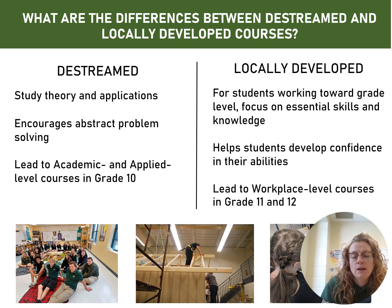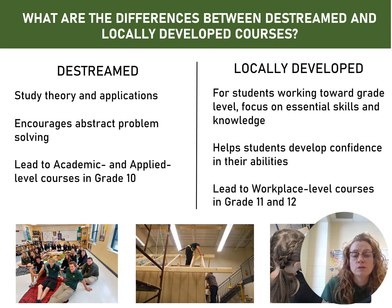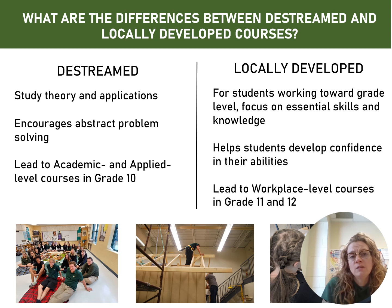The de-streamed level courses lead to applied and academic courses in grade 10, and then in grade 11 and 12 those lead to college and university level courses. The locally developed courses in grade 10 are also locally developed, and then in grade 11 and 12 those students would be on a workplace level pathway. Most students that come to St. John are choosing de-streamed going into grade 9.